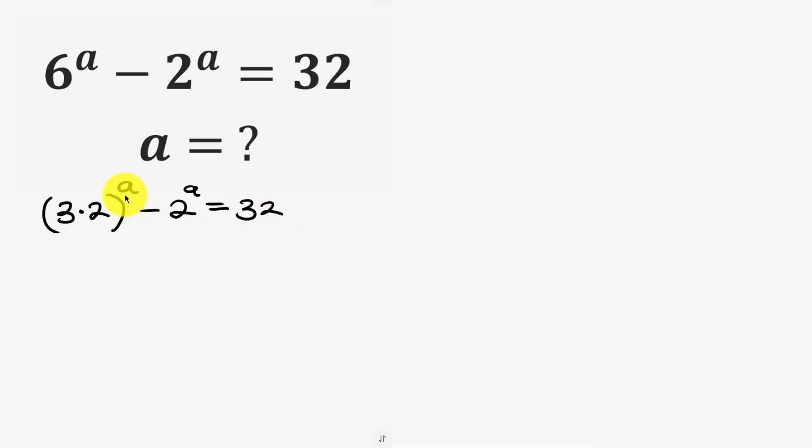Now let's apply the law of indices by distributing this a to 3 and 2. So this is 3 to power a times 2 to power a minus 2 to power a equal to 32.